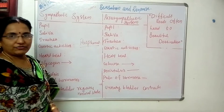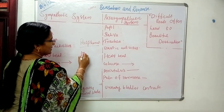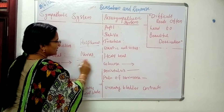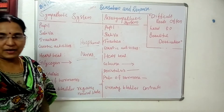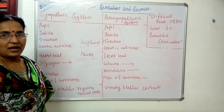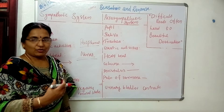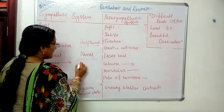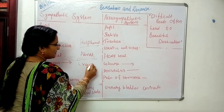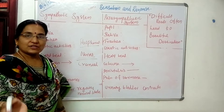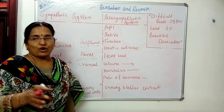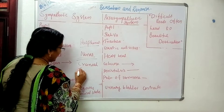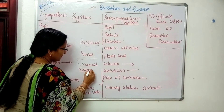The peripheral nervous system consists of nerves which originate from the brain and spinal cord. The nerves which are formed from the brain are known as cranial nerves, and nerves which are formed from the spinal cord are called spinal nerves.